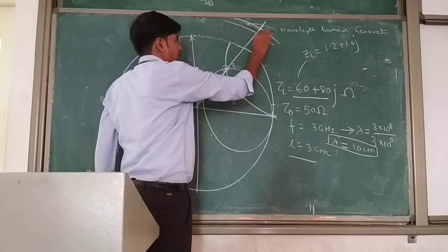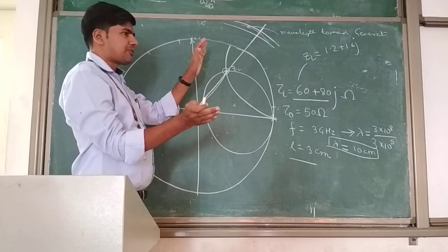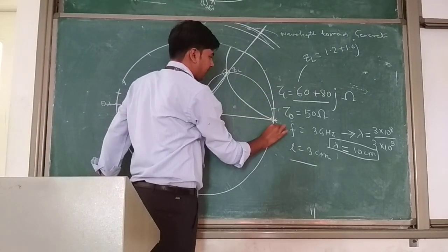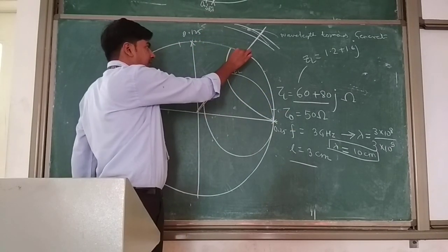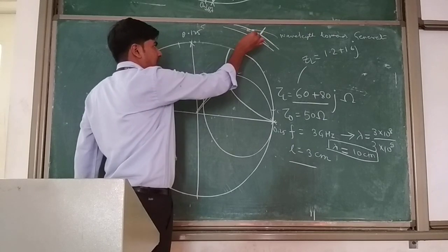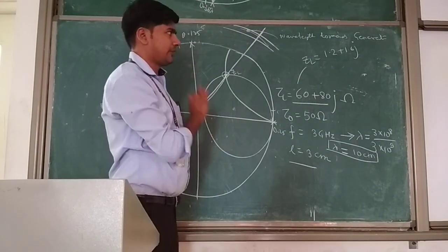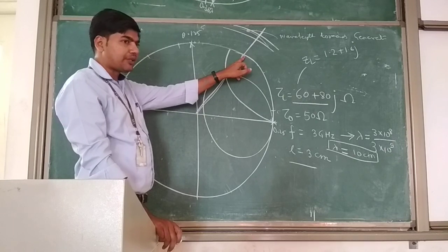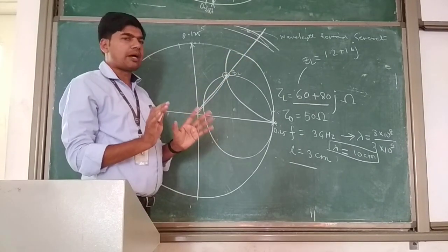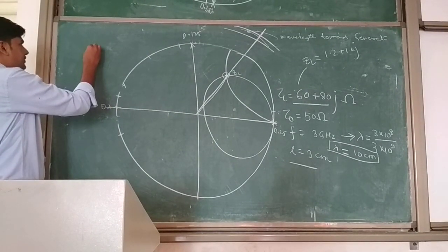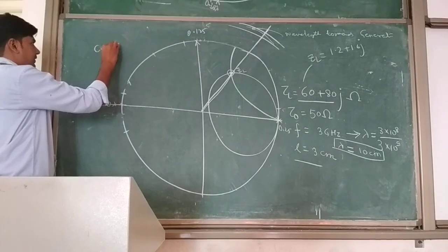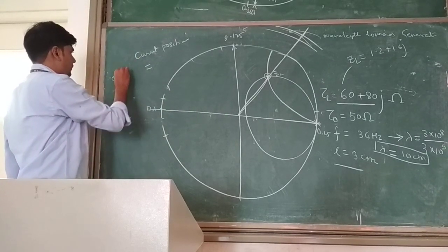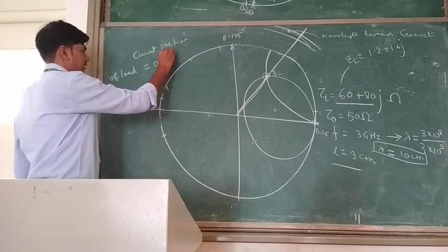In the last strip you have wavelength towards generator. The expected value is in the range of 0.125 lambda to 0.25 lambda. You can read that value from the Smith chart to find the current position of the load. Since I am not solving directly on a Smith chart, let us say this value is 0.16 lambda. So the current position of the load is 0.16 lambda. The length is given in centimeters, so we have to convert this length in terms of lambda.